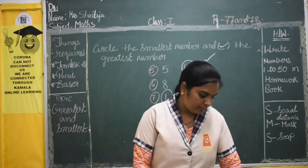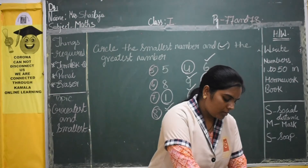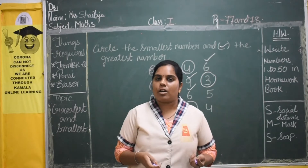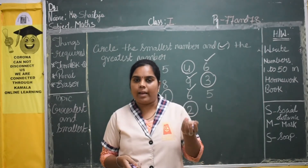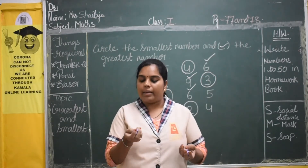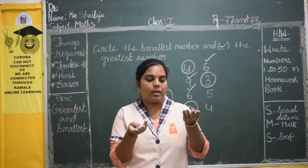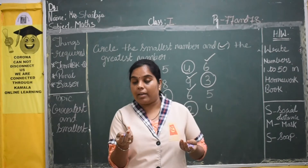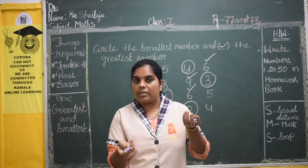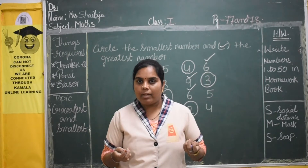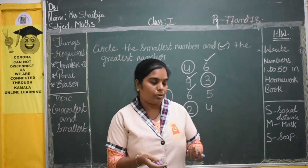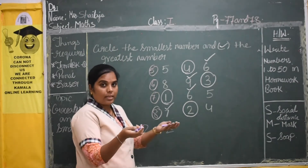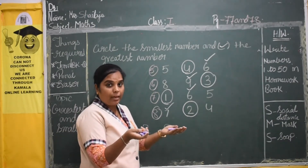For example, in my right hand I have 2 chalk pieces. In my left hand I have 2 chalk pieces. So in my right hand I have 2, left hand 2. So that means this is equal — both are equal. They are the same number. So there is the same number of chalk pieces in my right hand and left hand.